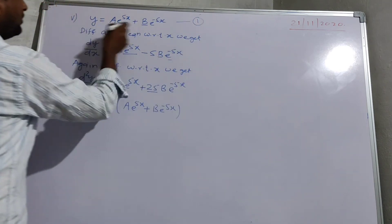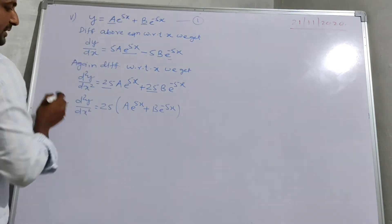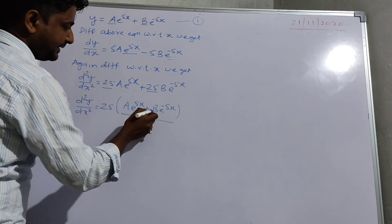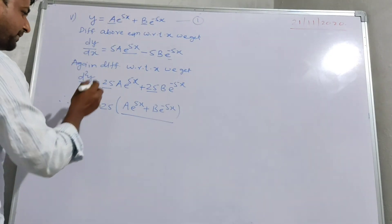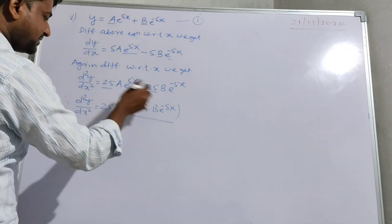Now if we just look carefully at the given equation, a e to the power 5x plus b e to the power minus 5x is nothing but the given equation, that is the value of y. So this is what we put in.